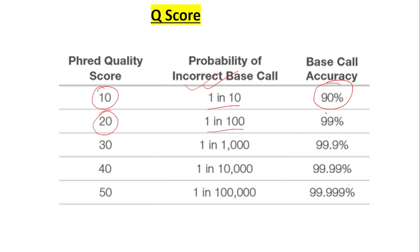Base call accuracy will be 99%. If Phred assigns a quality score of 30, that means the probability of an incorrect base is 1 in 1,000, and base call accuracy is 99.9%.